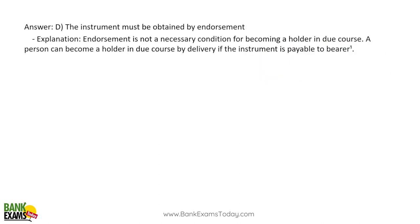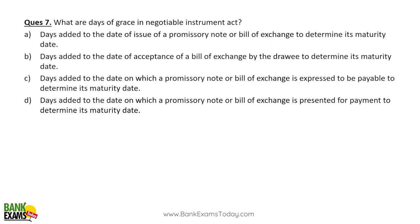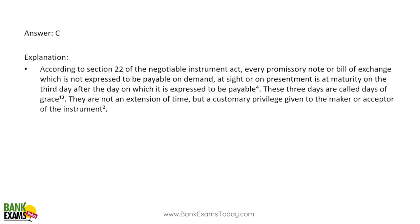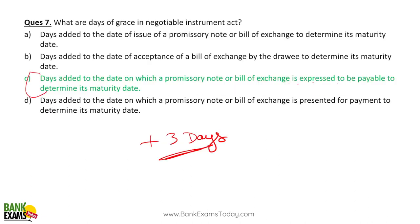Days of grace in a negotiable instrument: according to Section 22, three additional days are given beyond the date mentioned on a promissory note or bill of exchange, excluding public holidays. These days are added to the stated payment date to determine the maturity date of the instrument.